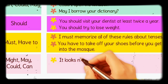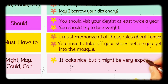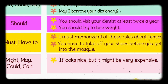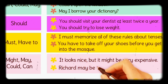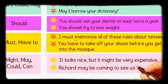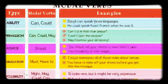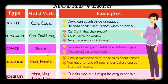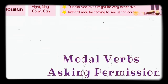Possibility means mumkyn — what is possible. The modal verbs used for possibility are 'might', 'may', 'could', and 'can'. For example: 'It looks nice but it might be very expensive' — this is possible. 'He may be coming to see us tomorrow.' So with possibility, you can use may, might, can, or could.